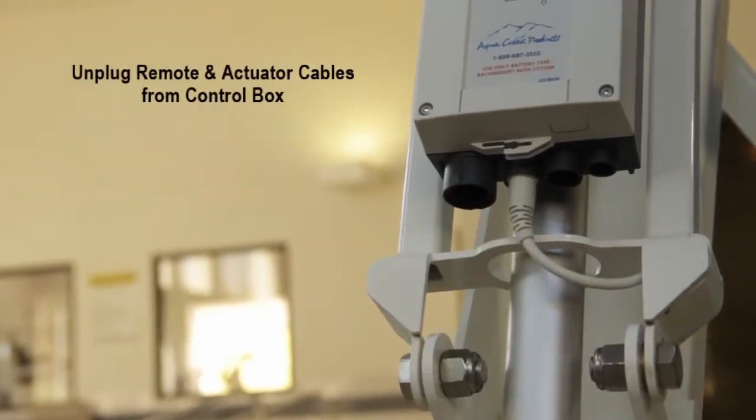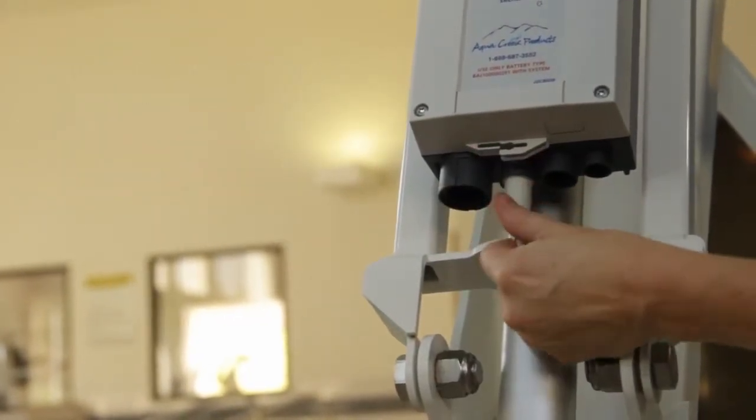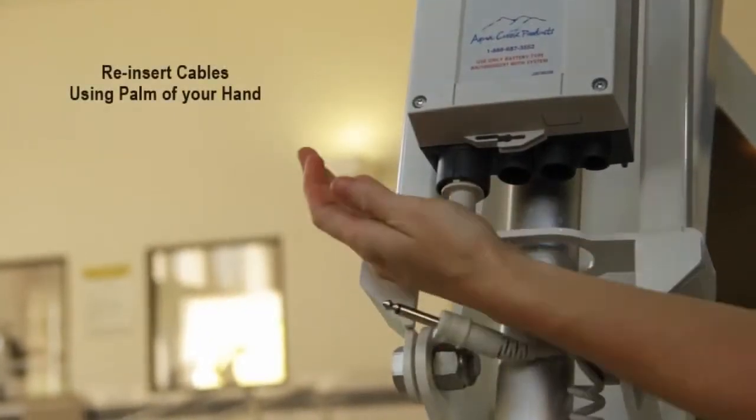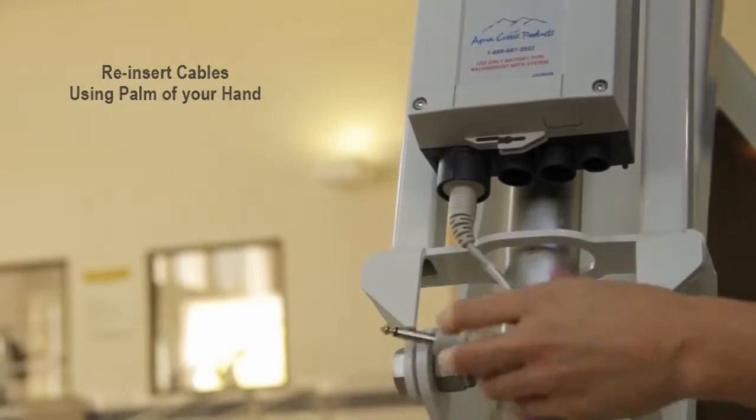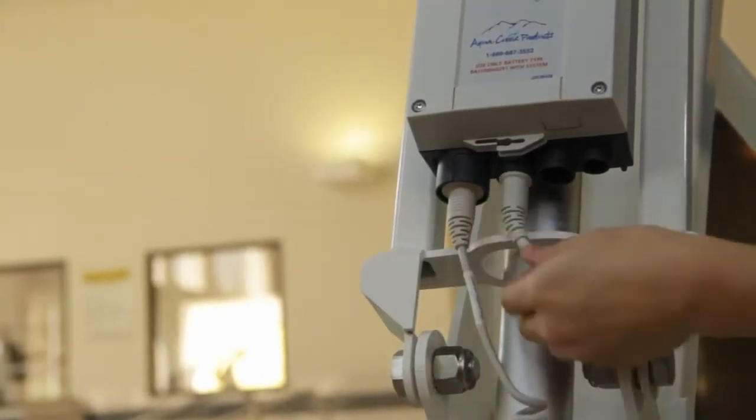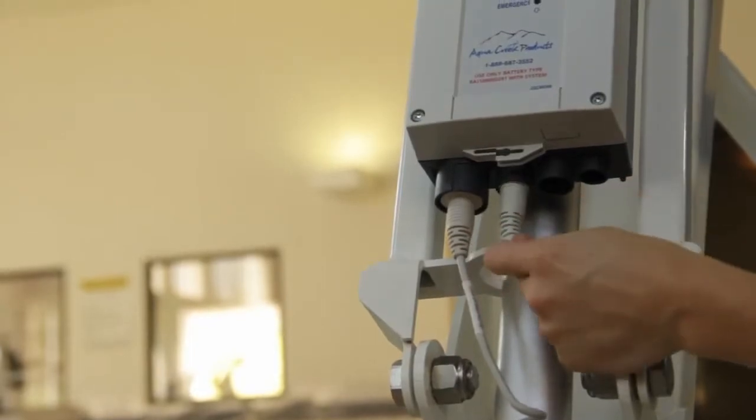Unplug the handset cable and actuator cable from the control box. Reinsert the cables into the control box using the palm of your hand. These are watertight connections and can be stubborn. Now, try operating your lift.